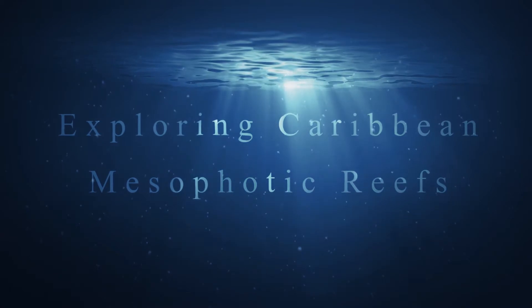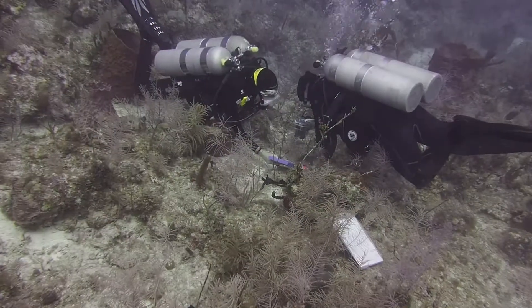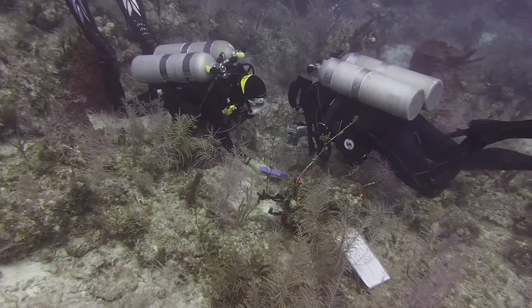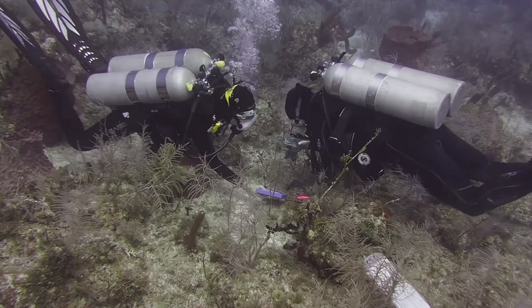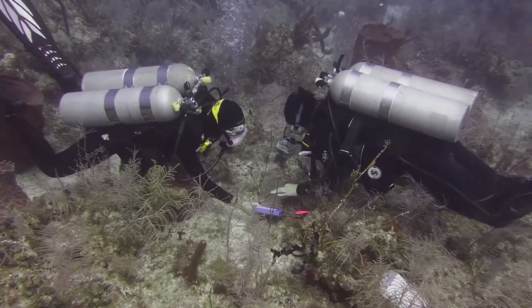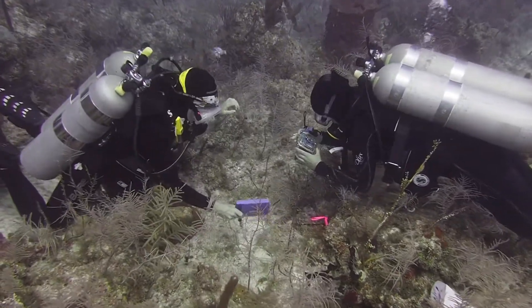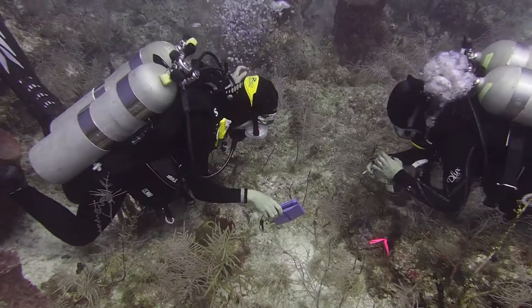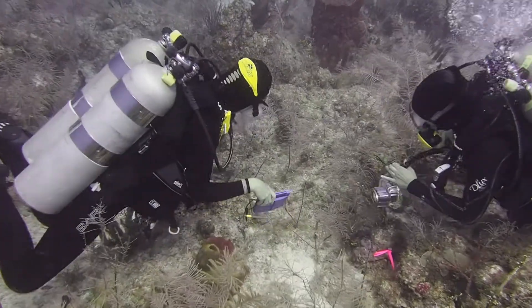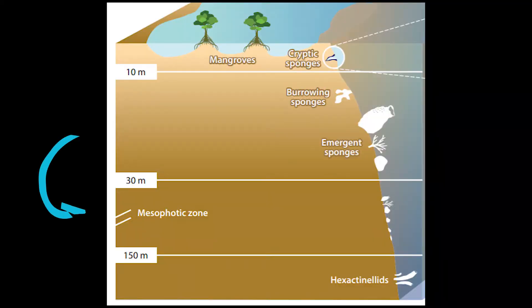Coral reefs are well explored to the depths of standard scuba diving, which is 30 meters or about 100 feet deep. But below this depth is a range called the mesophotic zone, where light levels decrease to darkness from 30 meters to 150 meters, or about 100 to 500 feet below the surface.